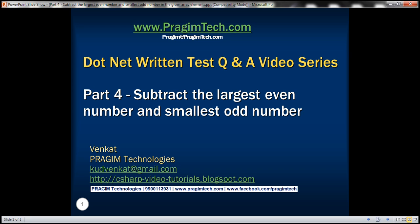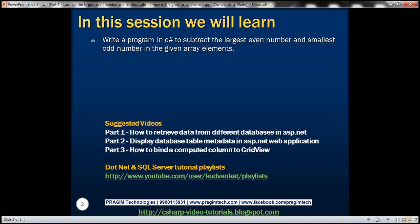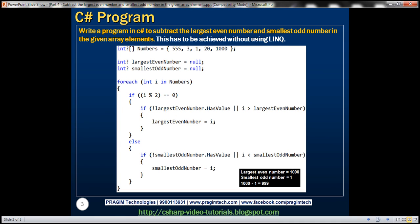This is part 4 of the .NET runtime test questions and answers video series. In this video, we'll discuss writing a program in C# to subtract the largest even number and smallest odd number in the given array elements. One of our YouTube channel subscribers faced this question in a C# runtime test. We have to achieve this without using LINQ, because when we use LINQ, it's straightforward to find the largest even number and smallest odd number using the LINQ Max and Min functions. We'll discuss that as well in just a bit.